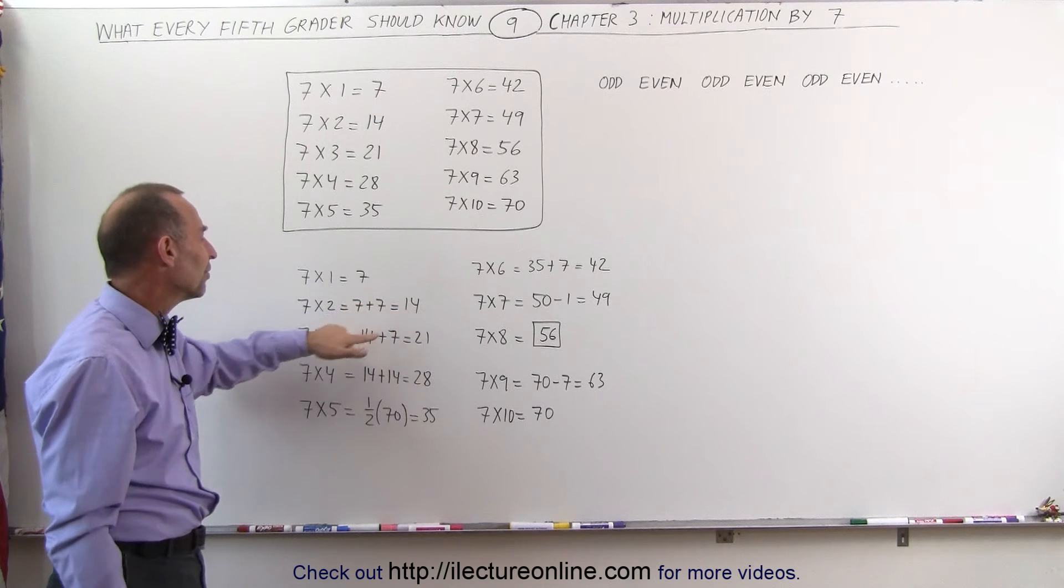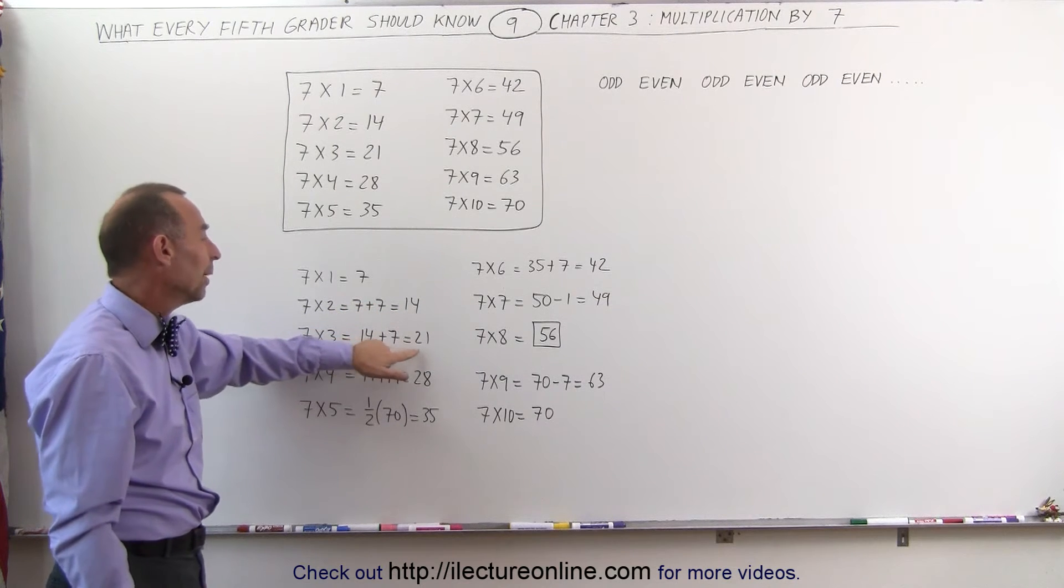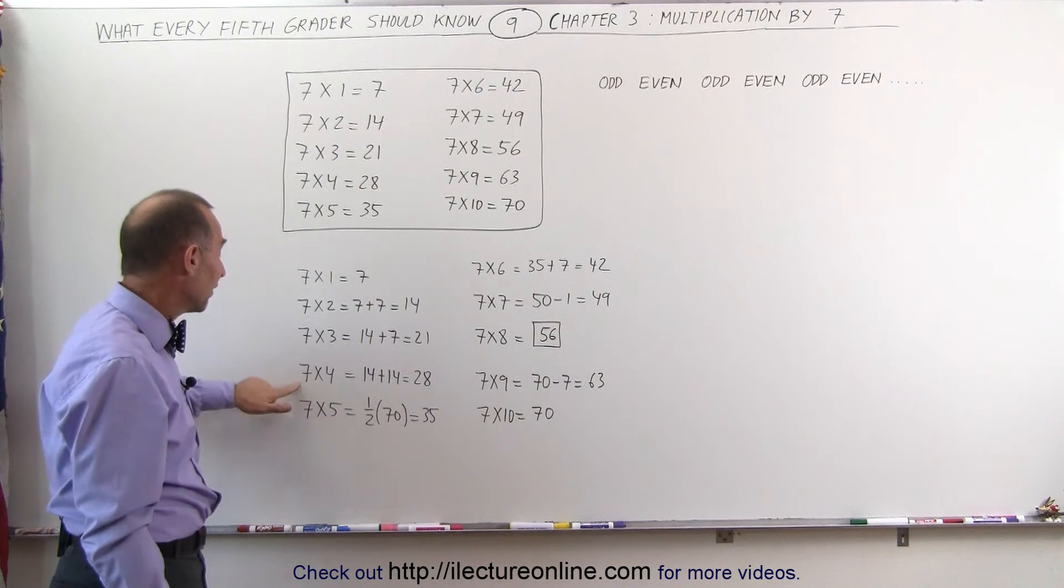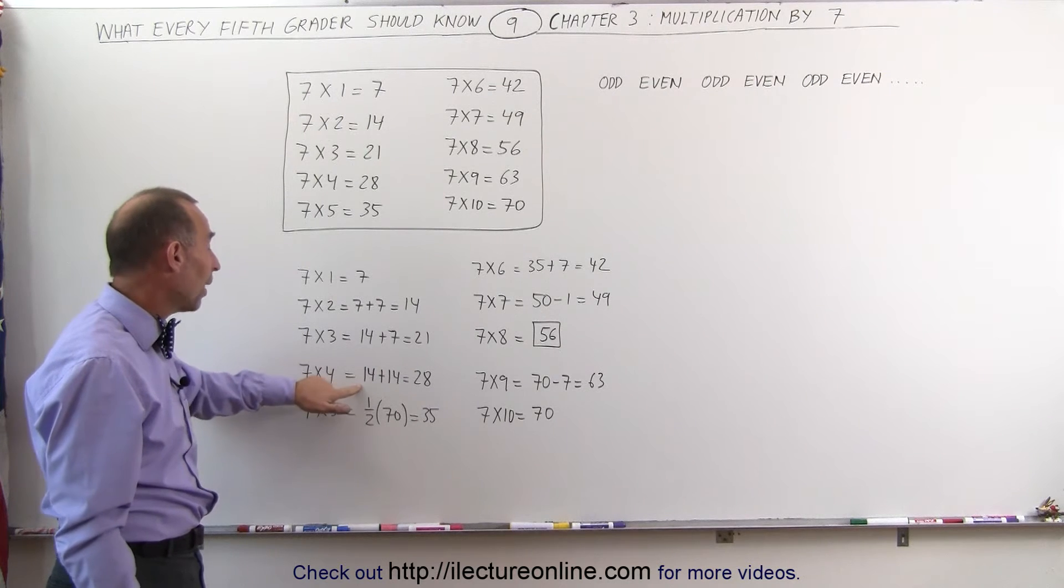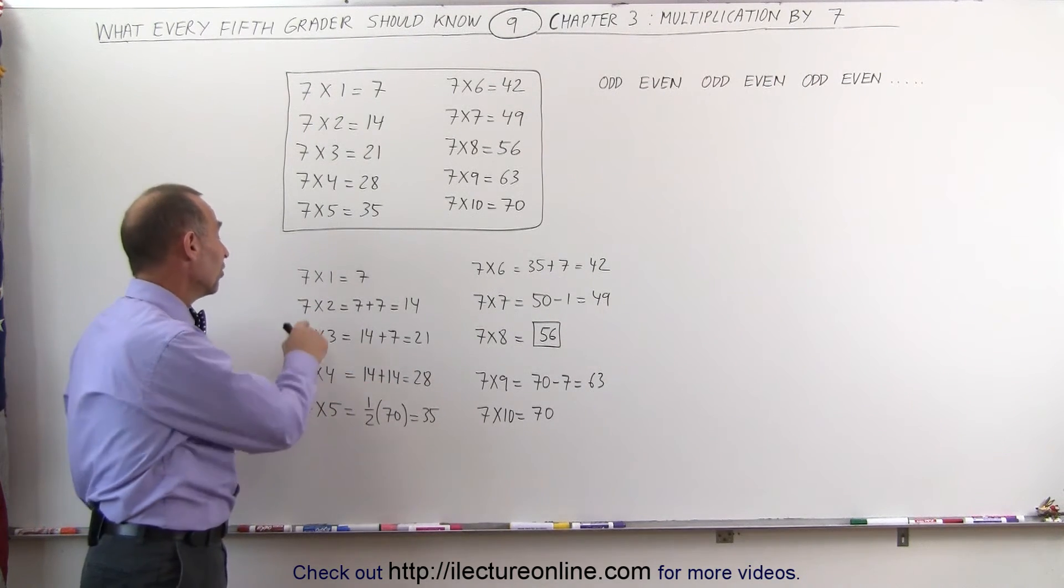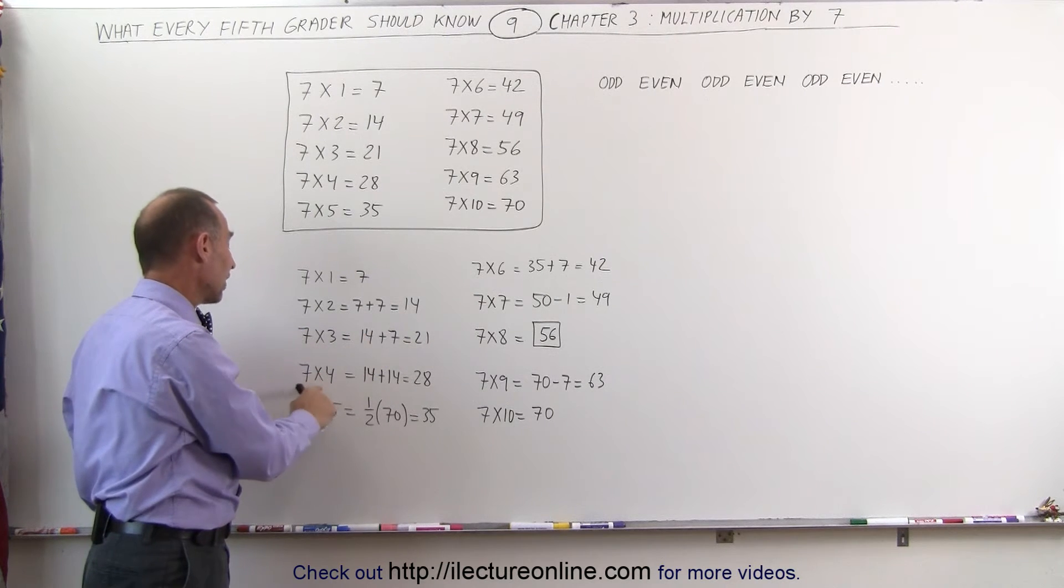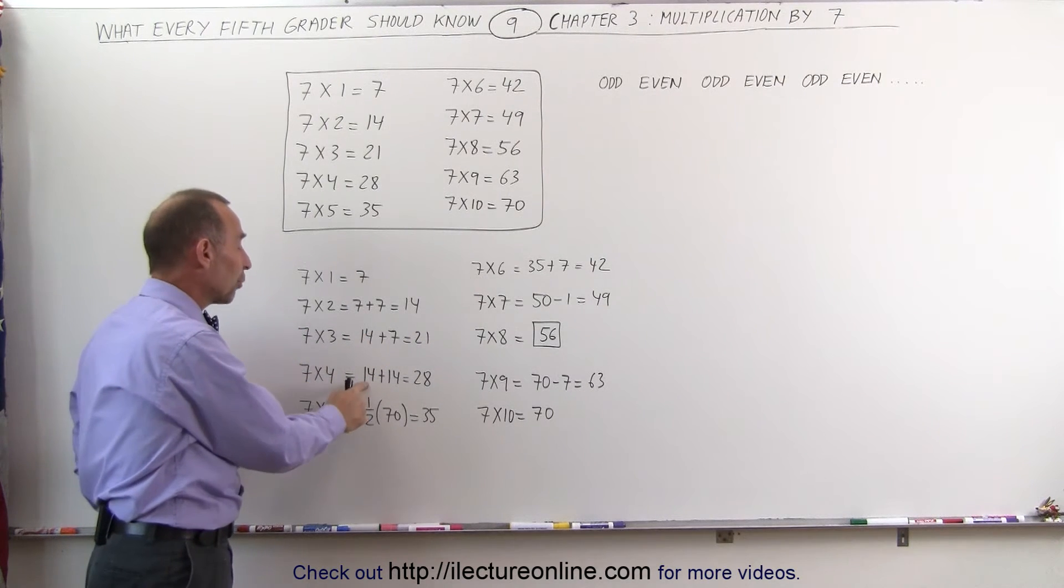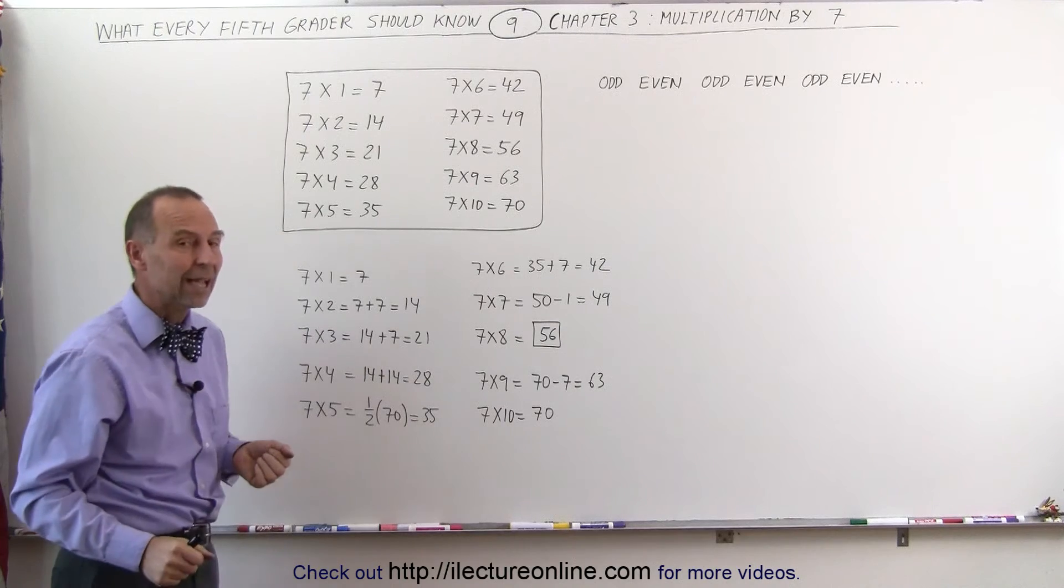7 times 3, we take the previous answer, add another 7 to it, and we get 21. 7 times 4 is like twice 14 plus 14, it's twice 7 times 2. Since 7 times 2 is 14, 7 times 4 is twice that, which would be 14 plus 14, which gives us 28.